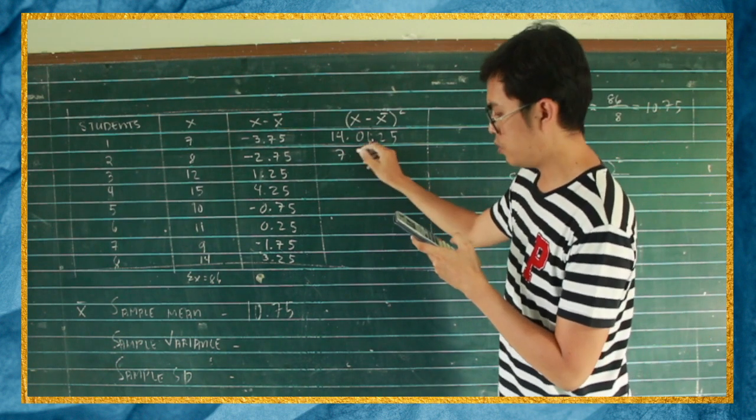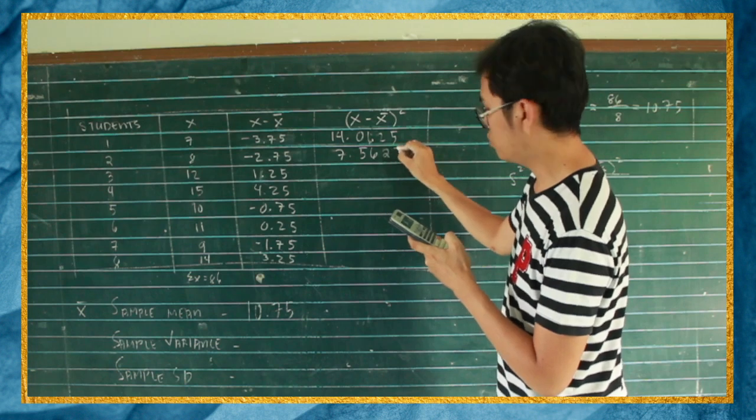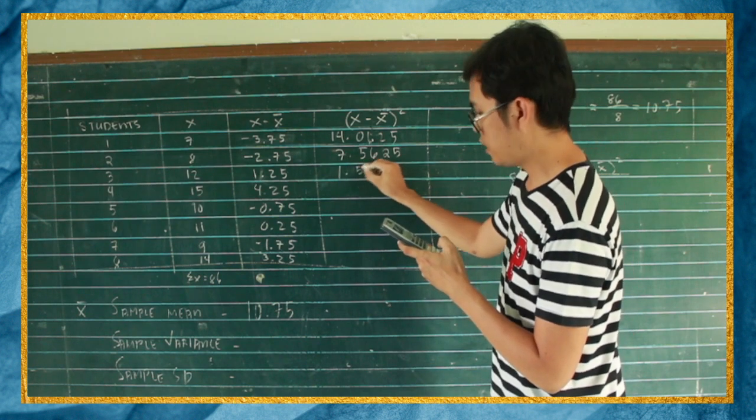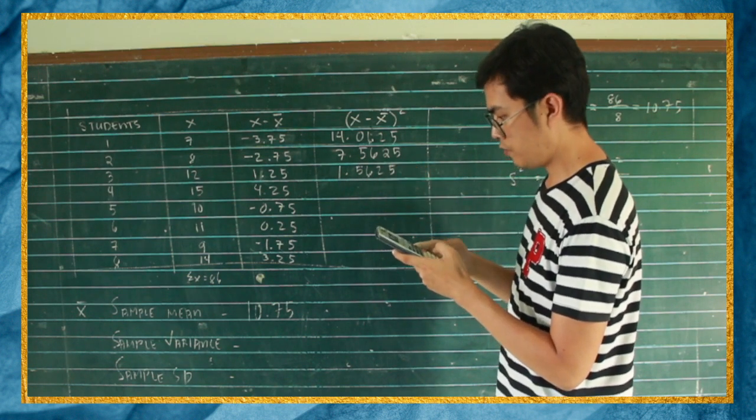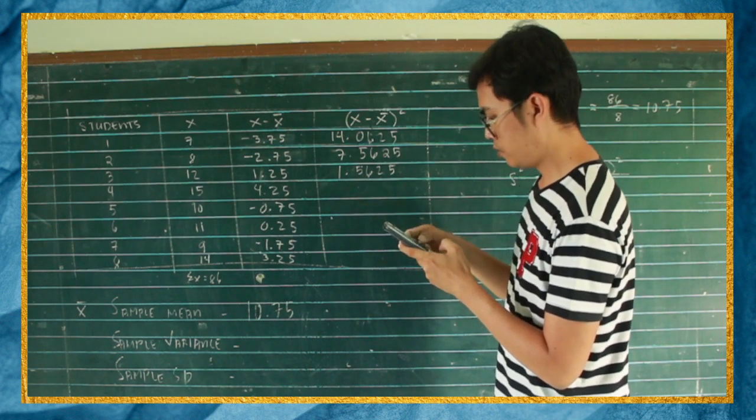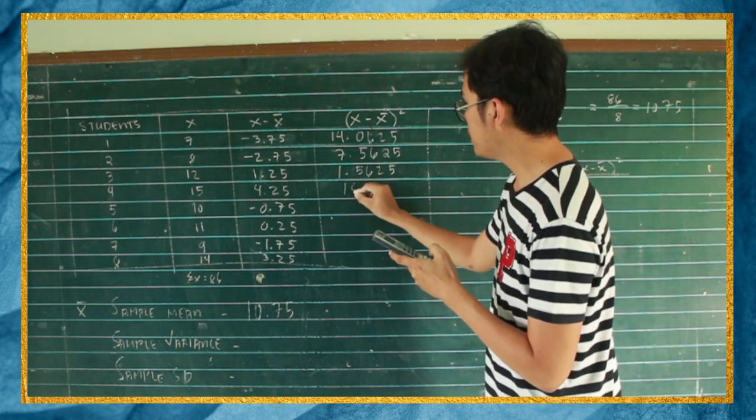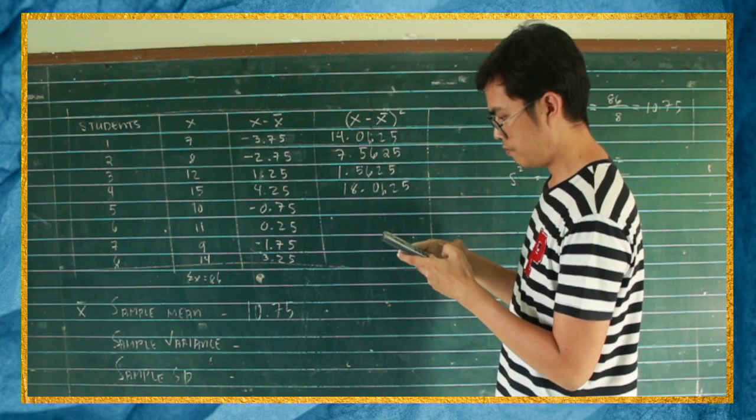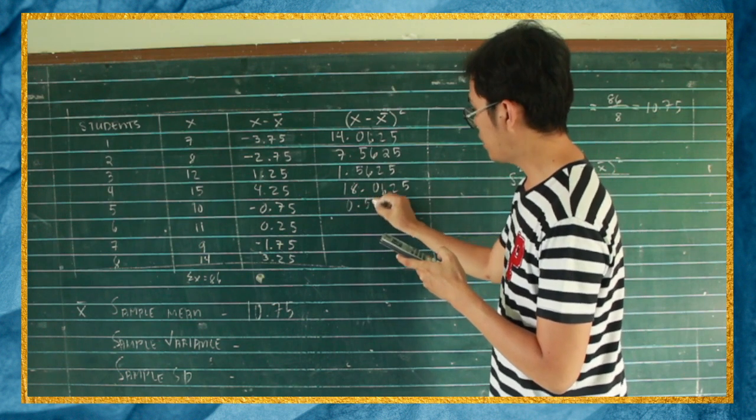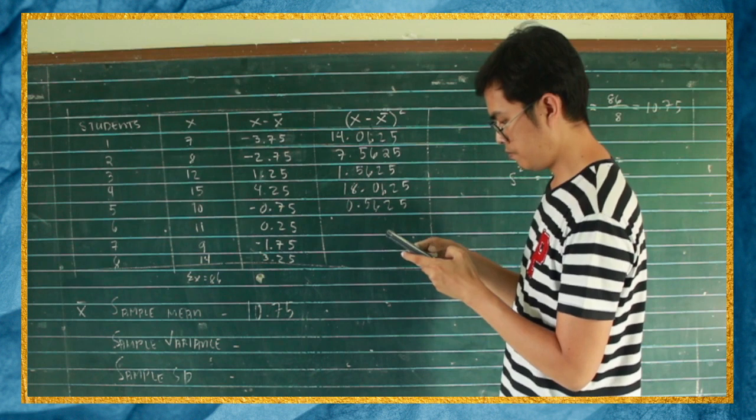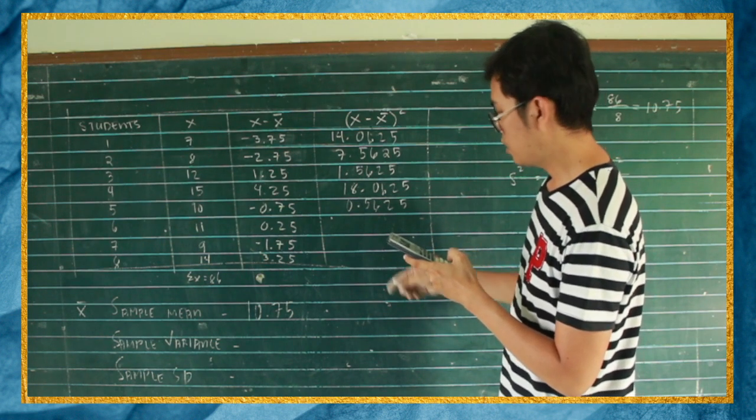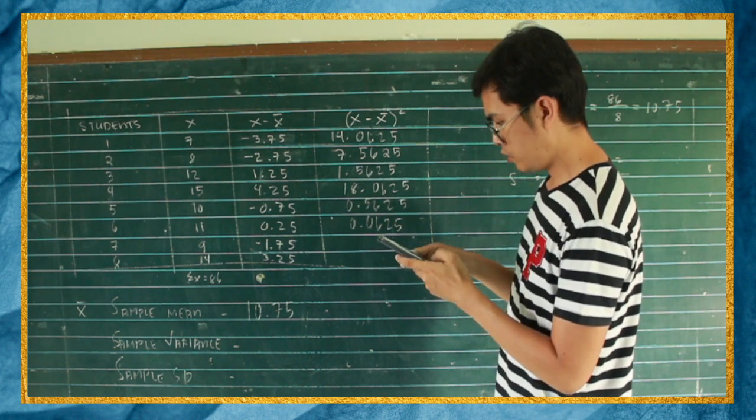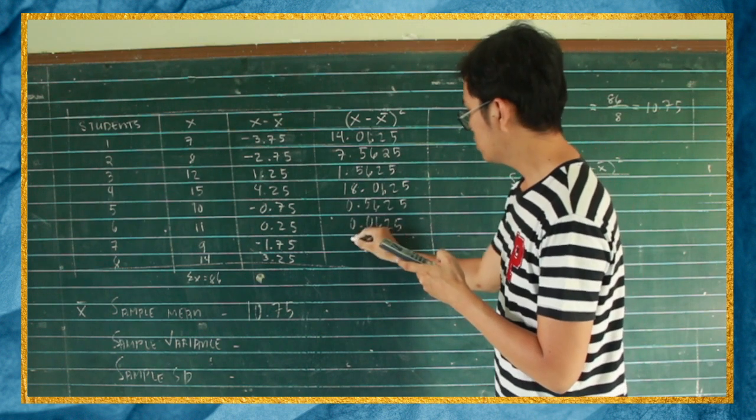2.75, so that would be 7.5625. 1.25, 1.5625. 4.25, okay 4.1625, so 18.0625. 0.75, 0.5625. 0.25, 0.0625. 1.75.